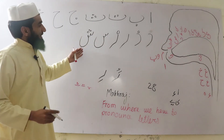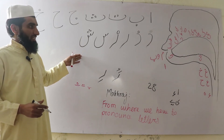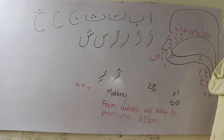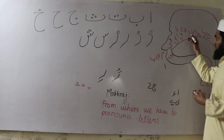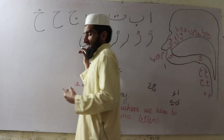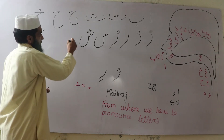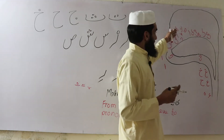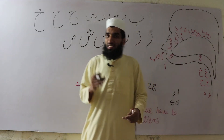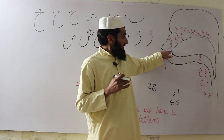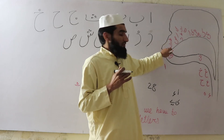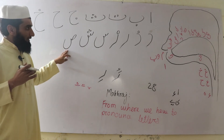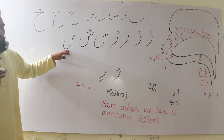Then is Sheen — like S-H-E-E-N. Its place of pronunciation is where the mid part of the tongue touches the upper part of the mouth in a flat condition: Sheen. It has three dots upside.